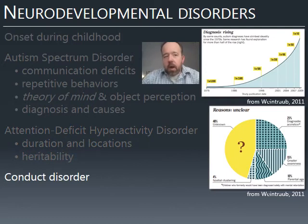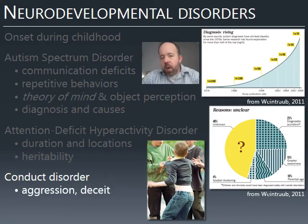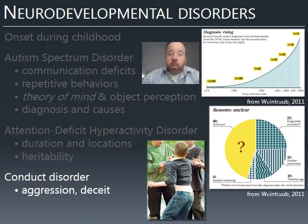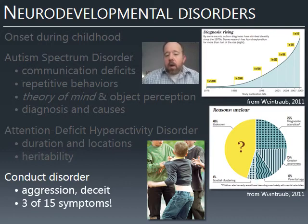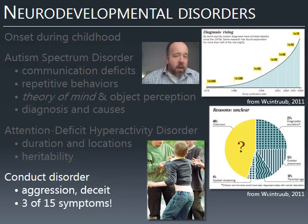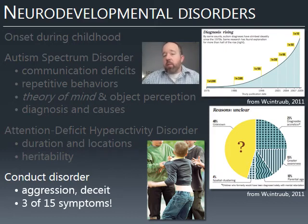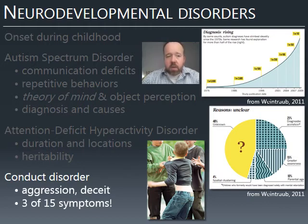Finally, there is conduct disorder, characterized by childhood behaviors like aggressive behavior, bullying, deceitfulness, lying, stealing, not obeying social rules, and running away. There are up to 15 symptoms, but a person only needs to exhibit three to qualify. This makes it a difficult disorder to diagnose — five children can all be diagnosed with conduct disorder while exhibiting no overlapping symptoms whatsoever, because so many possible symptoms exist and only three are needed.